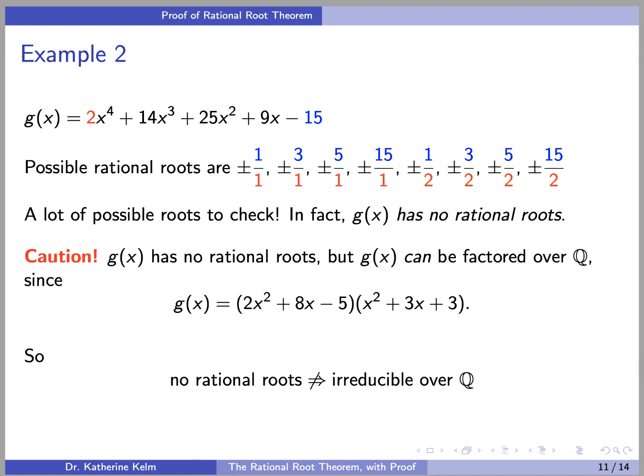Another caution: although g(x) has no rational roots, g(x) can still be factored over the rationals, since g(x) can be written as (2x² + 8x - 5)(x² + 3x + 3). This is not easy to determine, but you can check that it is true. So not having rational roots does not imply that the polynomial is irreducible over Q.